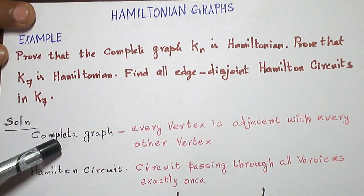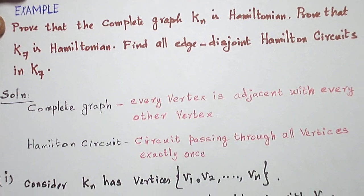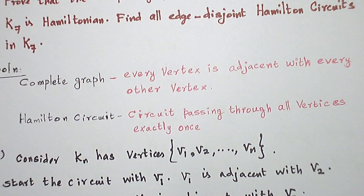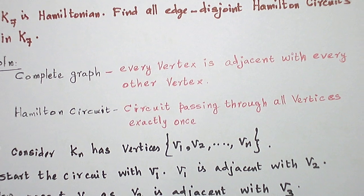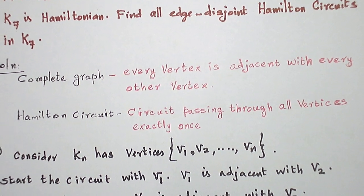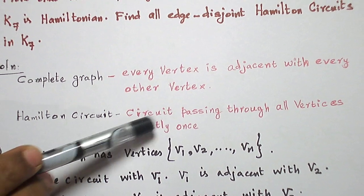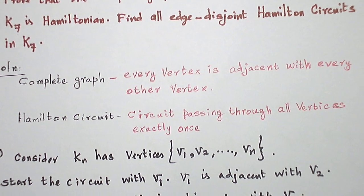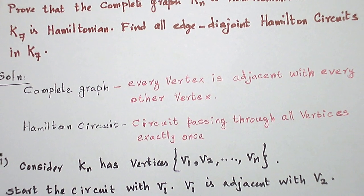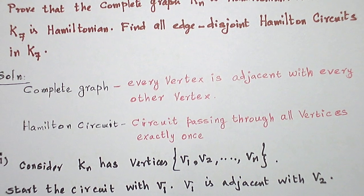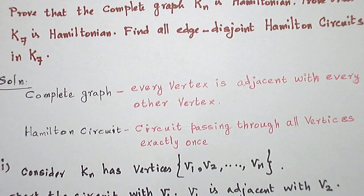So what is a complete graph? Every vertex is adjacent with every other vertex in the graph. That is called a complete graph. What is a Hamilton circuit? A circuit passing through all vertices exactly once is a Hamilton circuit. If the graph has a Hamilton circuit, it is called a Hamiltonian graph.